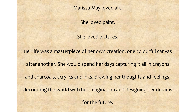We can follow William Joyce's example and by changing a few key words, use his structure of low and high lexical density to introduce a character of our own. Here's an example I've created: Marissa May loved art. She loved paint. She loved pictures. Her life was a masterpiece of her own creation, one colourful canvas after another. She would spend her days capturing it all in crayons and charcoals, acrylics and inks, drawing her thoughts and feelings, decorating the world with her imagination and designing her dreams for the future. So I began with three short, sharp sentences with low lexical density that clearly tell my audience what Marissa May's passion is — it's art, paint and pictures. Then I go on with a high lexical density description, which helps the audience to become more engaged and imagine the creations that Marissa May creates through her artwork.